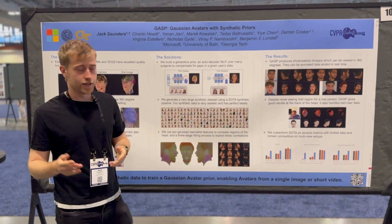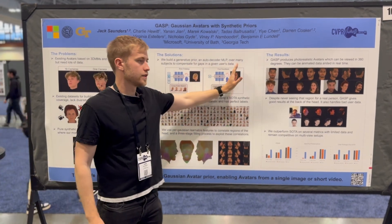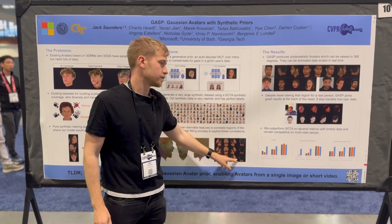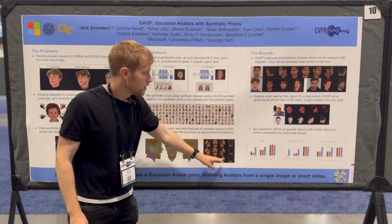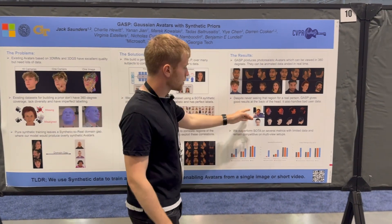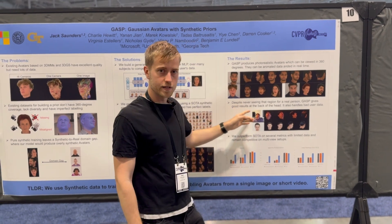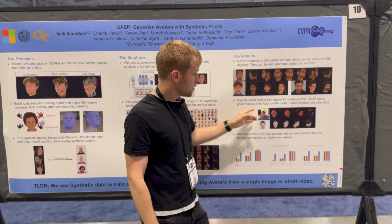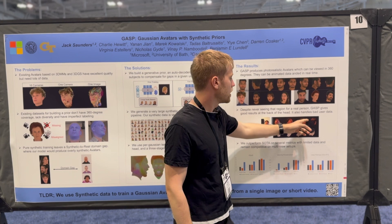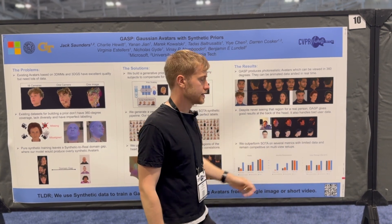We then have a third stage, which is less important, where we pass everything through, get the Gaussians, and optimize those directly on the views we do have. What's quite interesting is we've never seen the back of a real person's head, but despite that, we're still predicting a fairly reasonable back of the head from that synthetic data.